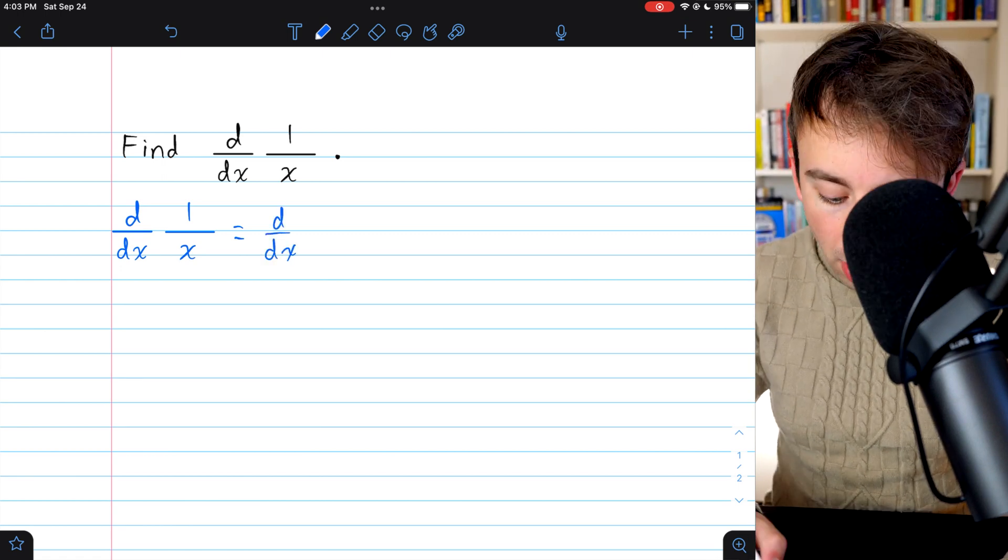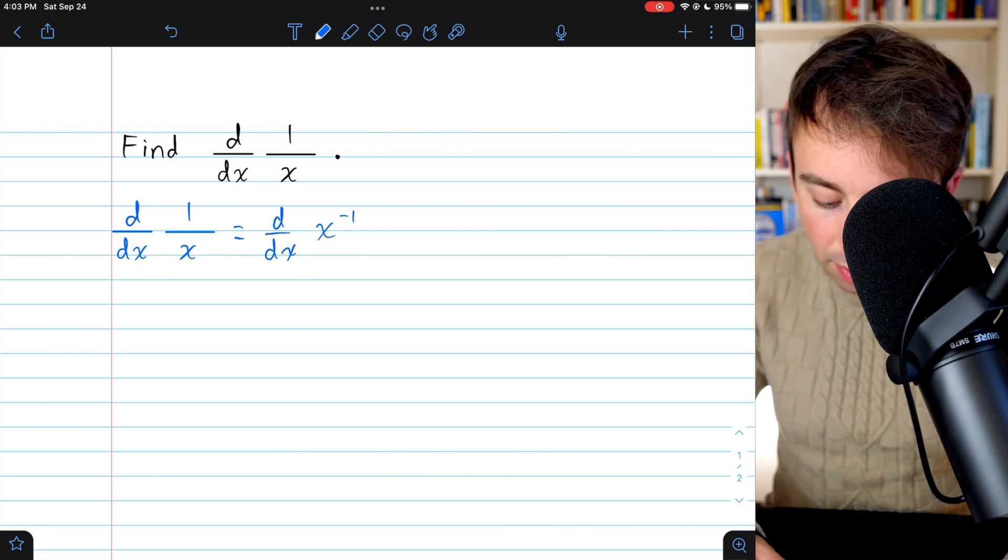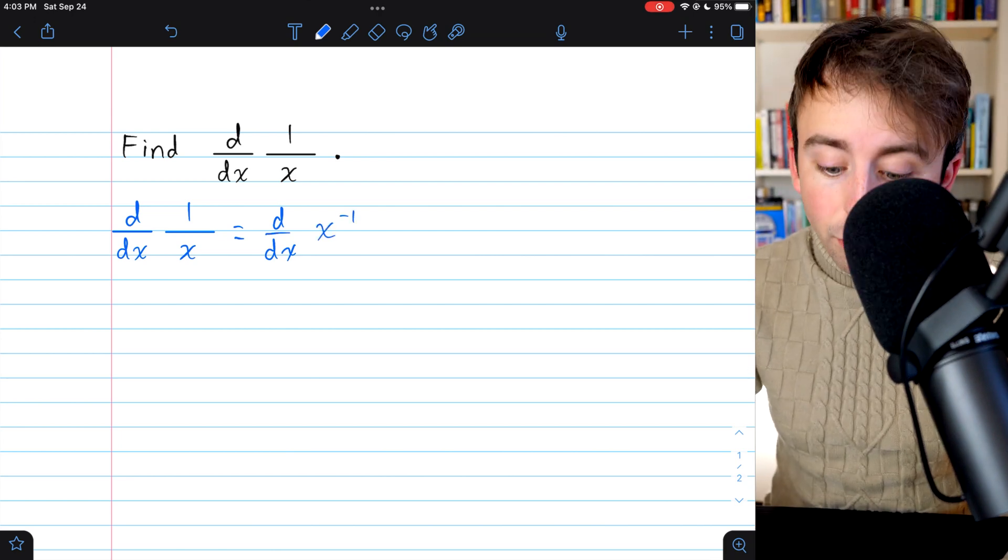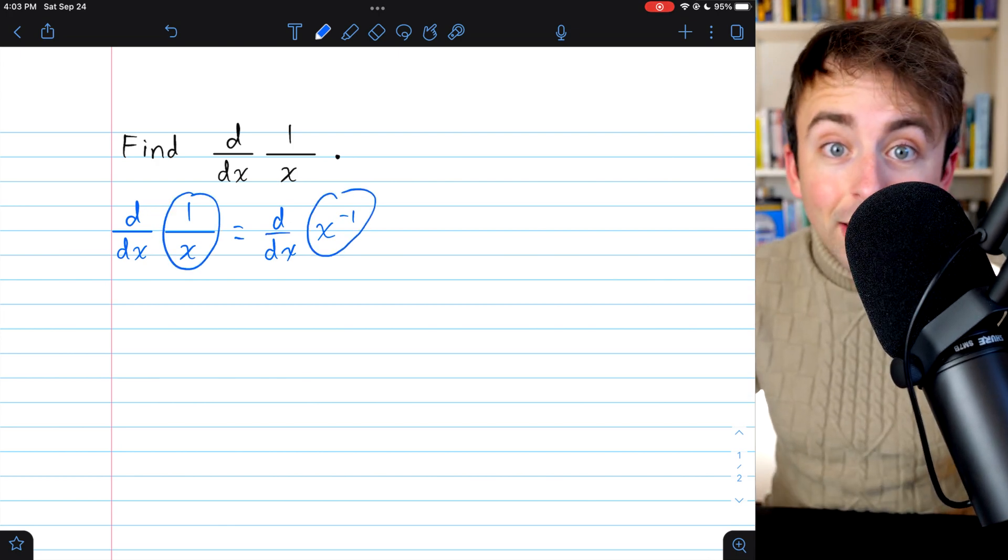So the derivative of 1 over x, well that's the same as the derivative of x to the power of negative 1, because these are the same things.